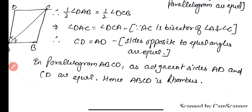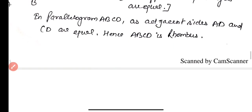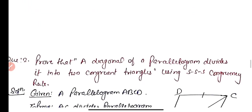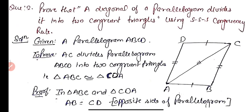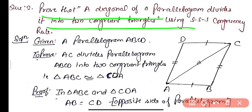This is all about question number 1. Now question number 2: Prove that a diagonal of a parallelogram divides it into two congruent triangles using the Side-Side-Side congruency rule.